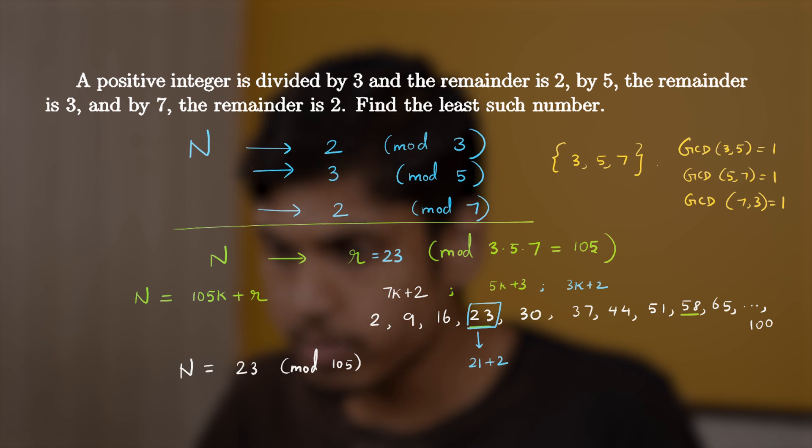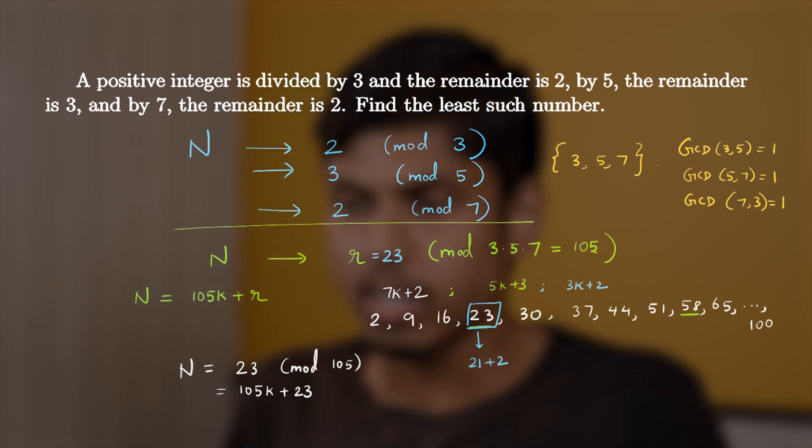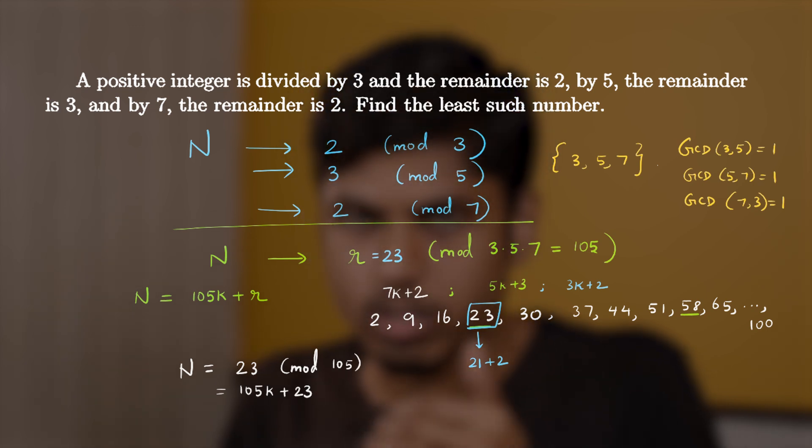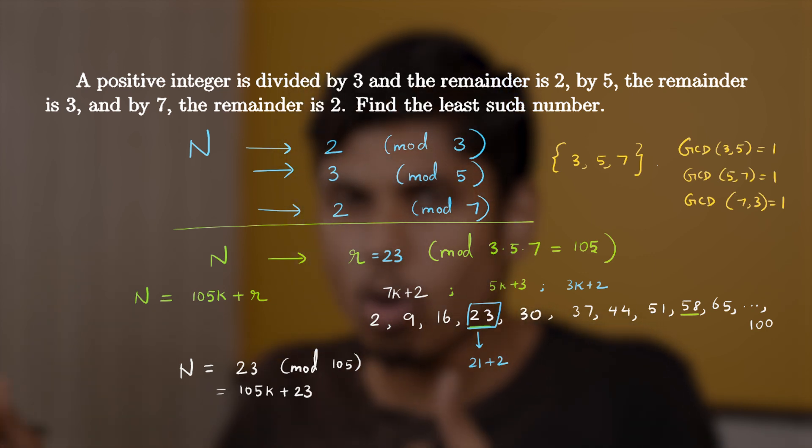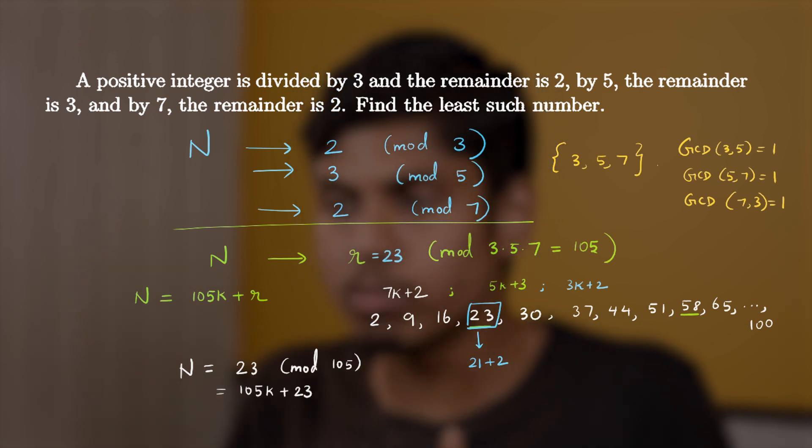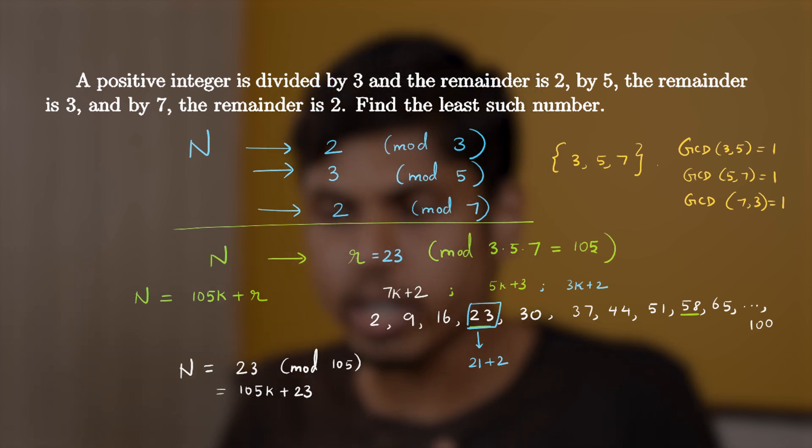So we get that the solution is 23 mod 105, or in other words, 105k plus 23. So here, I did not use any properties of congruences. And without it, we reach the conclusion. And do notice that while solving through this method, start from the largest number so that you need not write a lot of numbers in the initial defining sequence of those numbers of the form 7k plus 2. So all solutions of the form 105k plus 23 describes the solution set of n.